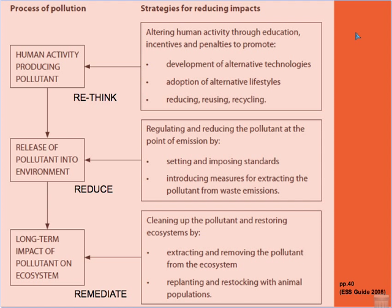So what are some strategies for managing the problem of eutrophication? Looking at a model from page 40 of the ESS guide, the process of pollution management is broken into three phases: the first involves rethinking the human activity so effects can be minimized; the second is a strategy to reduce the amount of pollutant entering the system; and the third, more long-term strategy involves remediation of the system. The first solution is the most ideal in terms of effects and cost.